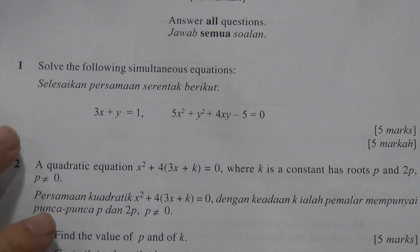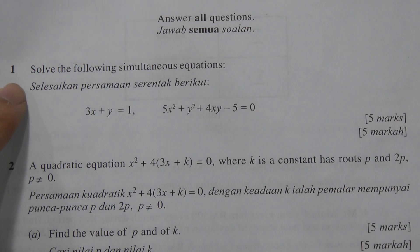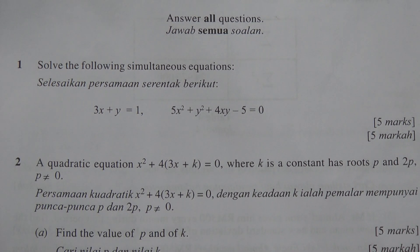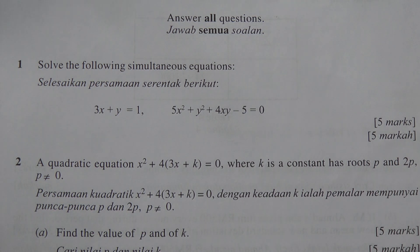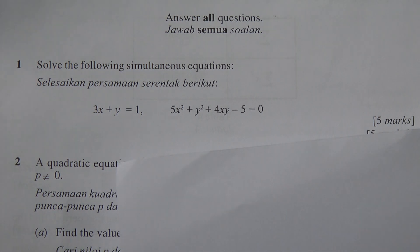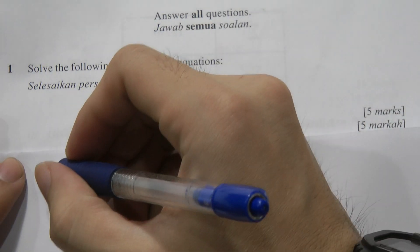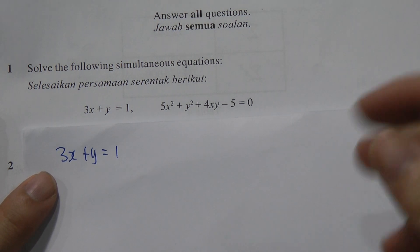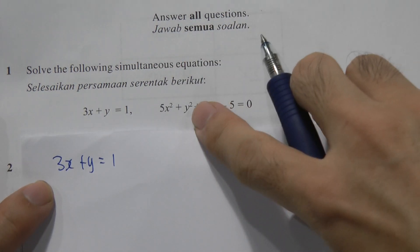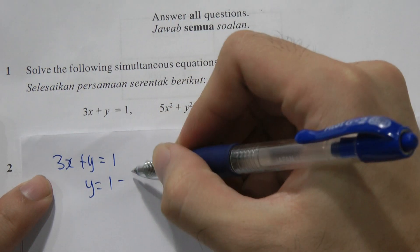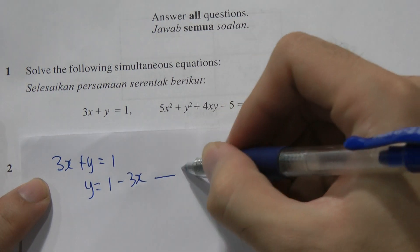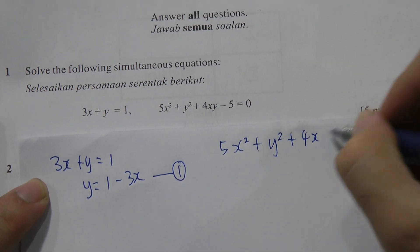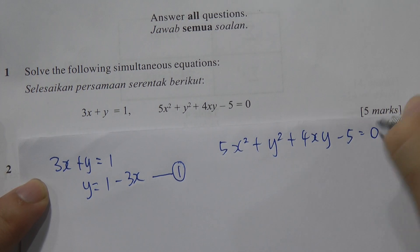Let's have a look at question one. I personally think question one is quite simple — it's a simultaneous equation and it asks you to solve it, meaning find the value of x and y. I write down the equations: 3x + y = 1. First I want to find y, so y = 1 - 3x. That's equation one. The second equation given is 5x² + y² + 4xy - 5 = 0.